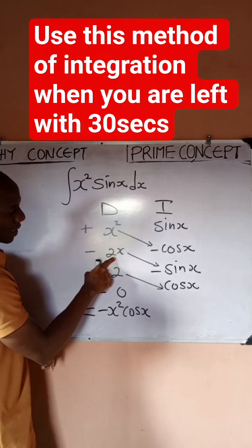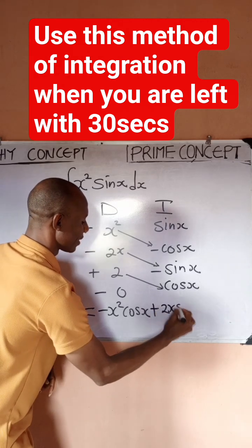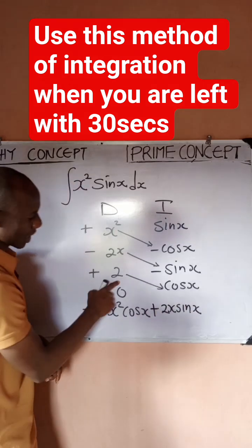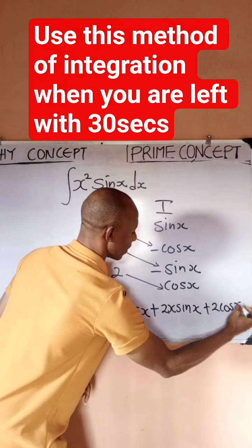Minus times 2x times this becomes plus 2x sine x. Plus times 2 times this becomes plus 2 cos x.